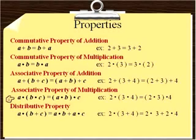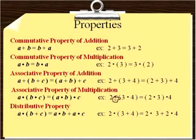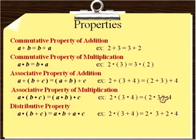The associative property of multiplication is basically the same idea — we're multiplying 3 numbers and grouping them in 2 different ways. With 2 times 3 times 4, if I do 3 times 4 first, that gives me 12, times 2 gives me 24. If I group the 2 and the 3 together first, that gives me 6, times 4 gives me 24 as well.